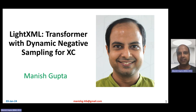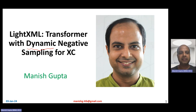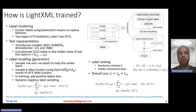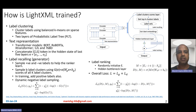Hi, my name is Manish Gupta, and in this video I'm going to talk about LightXML, which is basically how to use transformers with dynamic negative sampling for extreme classification. The main selling point of this paper is dynamic negative sampling. The extreme classification problem is the multi-label classification problem where the number of unique labels can be in millions. LightXML is one of the algorithms to solve this problem.